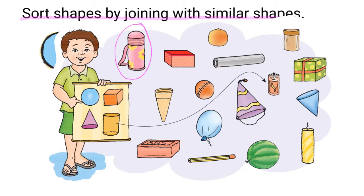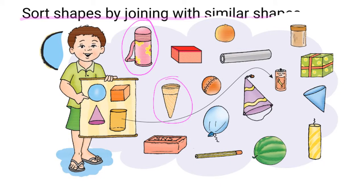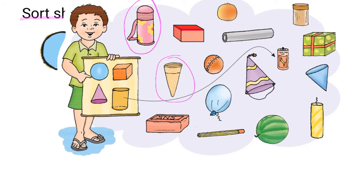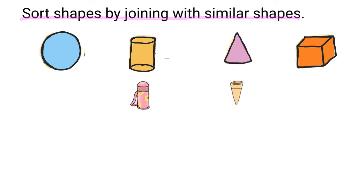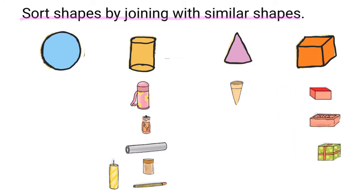Our first object is a water bottle. The water bottle is a cylinder. Our next object is a cone — the cone is cone shaped. The next one is a box; this box is a square. The next one is a battery — the battery is also a cylinder. This roll is also a cylinder. This jar is a cylinder. This candle is also a cylinder. We also have a pencil — this pencil is also a cylinder. We have many different cube shaped objects in the image.